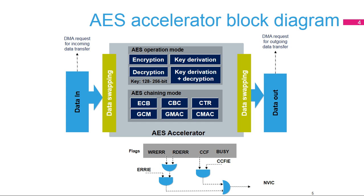The CCM standard defines specific encoding rules for the first authentication block, called B0 in the standard. In particular, the first block includes flags, a nonce, and the payload length expressed in bytes.